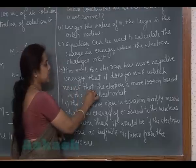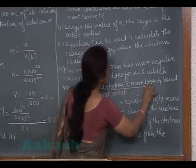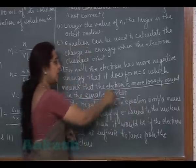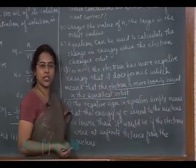Which means that the electron is more loosely bound in the smallest orbit. Here the statement is incorrect.